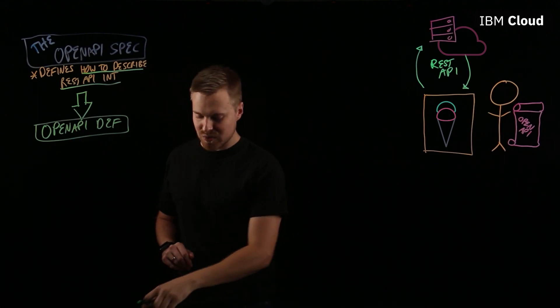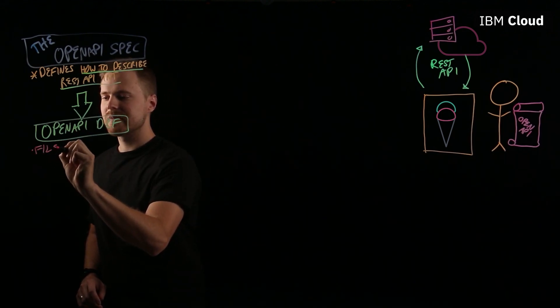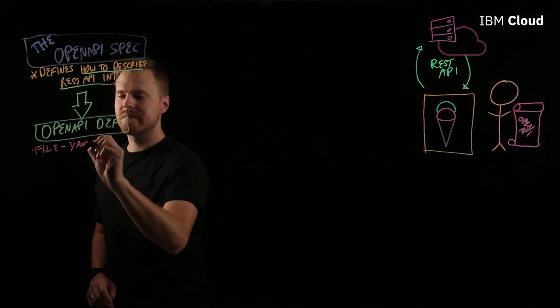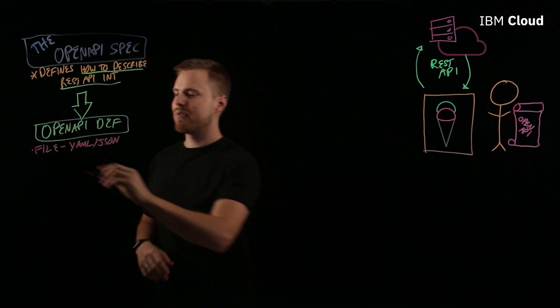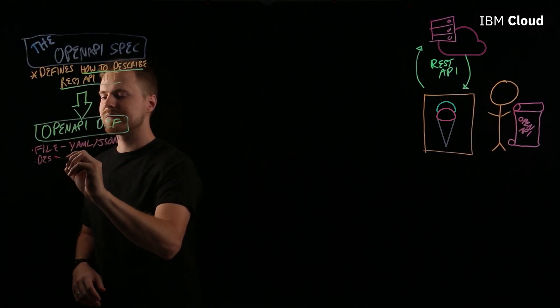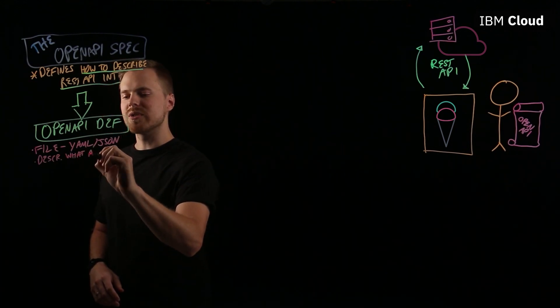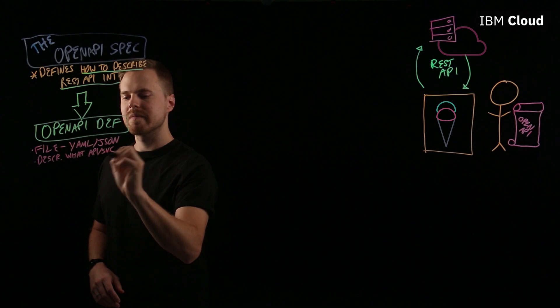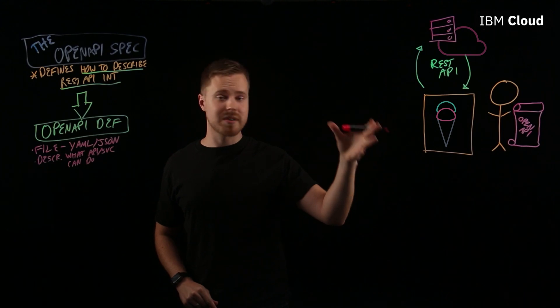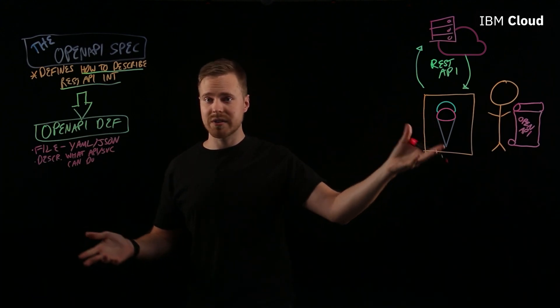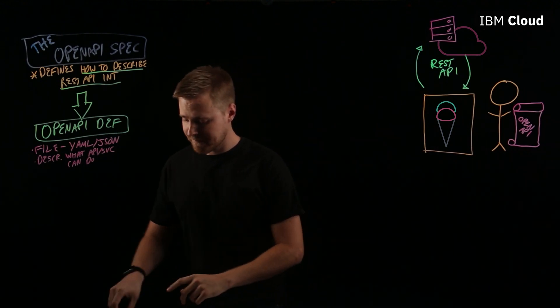So, an OpenAPI definition, what is that? It's actually a file. It's typically YAML or JSON, and like we said before, it describes what an API or service can do. So that's what Mark referenced to understand what this API can do, what the service can do. It outlines exactly that.